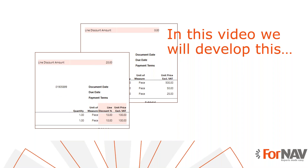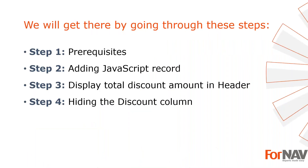Today we are going to use a JavaScript record to calculate a total amount and use that amount in various places in a sales invoice layout. Specifically, we want the header of an invoice to show the total amount which is discounted on that invoice. Additionally, we want the invoice body to reflect whether there are any discounted lines at all — we don't need to see the discount column if nothing is being discounted. Lastly, we're going to edit the layout to reflect this dynamically using the on print property of the ForNAV designer.